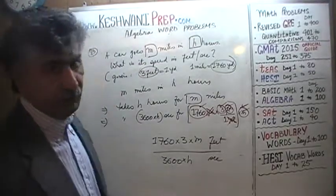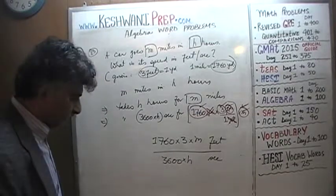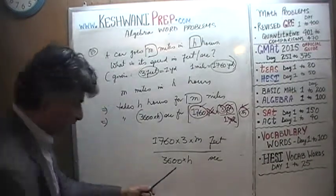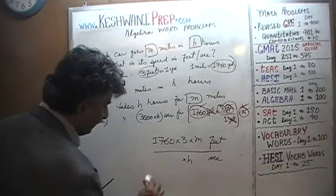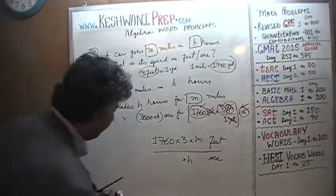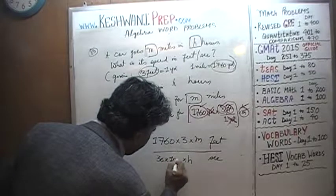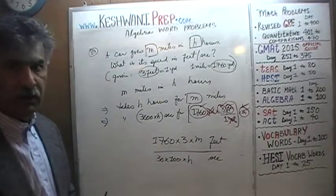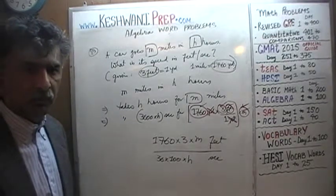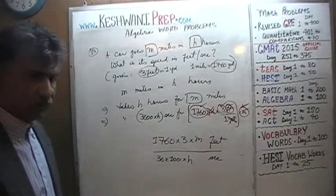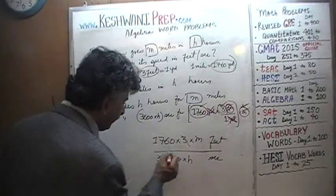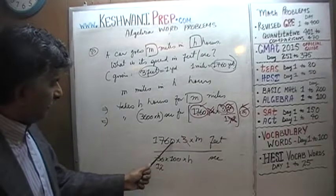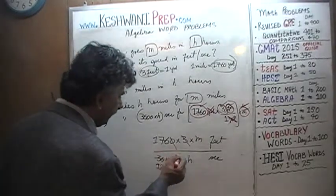This is where we have to take our time, otherwise we are going to end up making mistakes. The first thing I would like to do is write 3600 as 36 times 100 — it will make our life easier. The sequence of steps does not matter as long as your work is correct. I see 3 on the top and 36 on the bottom; let's divide top and bottom by 3 — 3 goes away and 36 becomes 12. Then I see 100 on the bottom; let's divide top and bottom by 10.